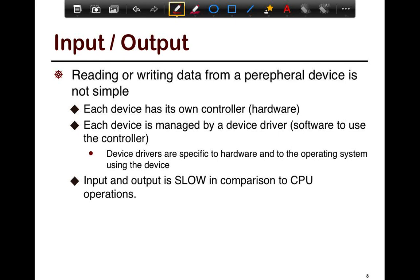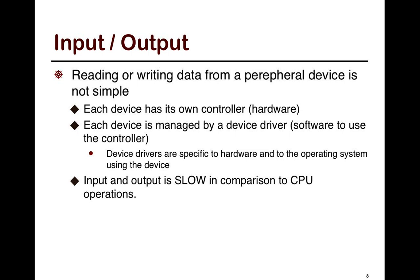We looked at what interrupts are. Now we want to look at where they are used and why they are useful. The primary reason that interrupts are useful is for input/output devices. If you want to read or write from a peripheral device, each device has its own controller, each device is managed by some piece of software, and you want to have the hardware interact with the software in some way.